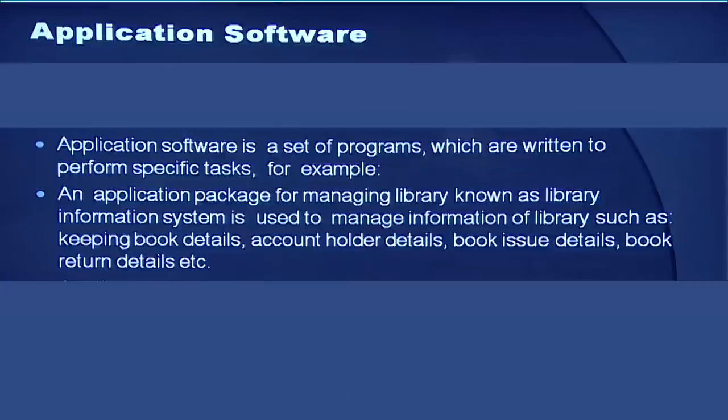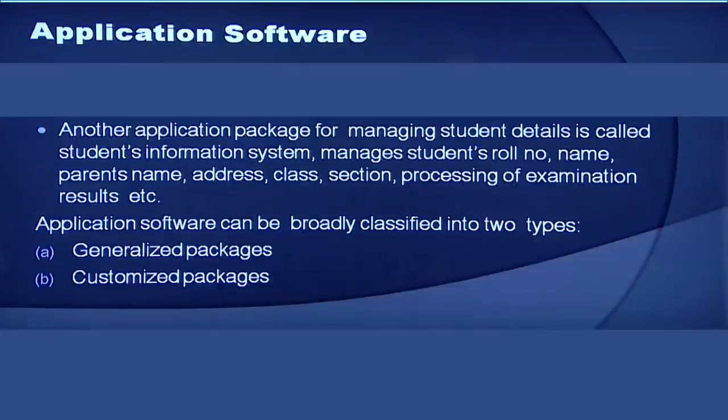Then next we have application softwares. Application software is a set of programs written to perform specific tasks. For example, an application package for managing a library is known as a library information system, used to manage information such as book details, account holder details, book issue details, book return details etc. Another application package can be a student information system, which can manage student's roll number, name, parents' name, address, class, section, processing of examination results etc.